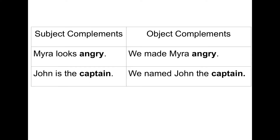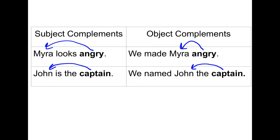Let's compare the two types of complements. Myra looks angry — Myra equals angry, angry describes Myra the subject: subject complement. We made Myra angry — Myra is the direct object, angry describes the direct object: object complement. John is the captain — John equals captain, captain describes the subject. We named John the captain — captain describes John the direct object: object complement.